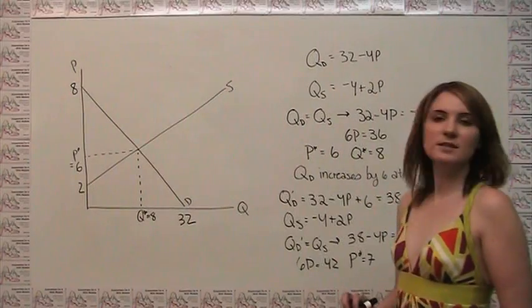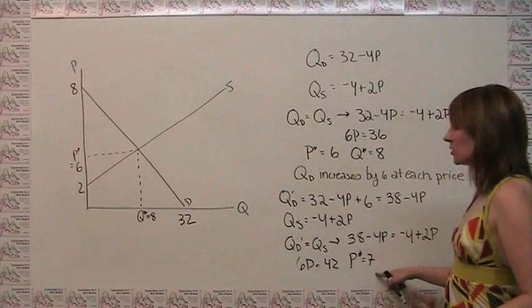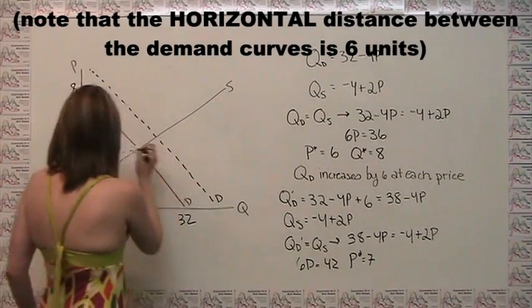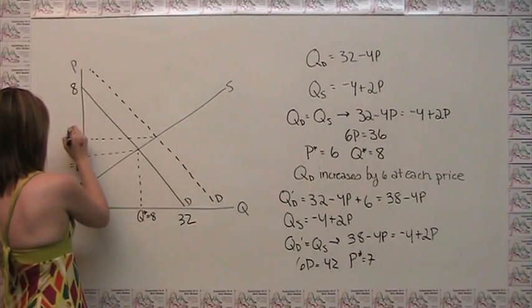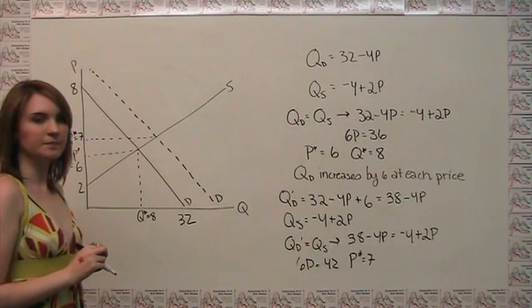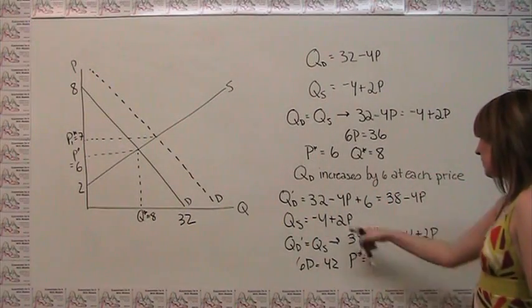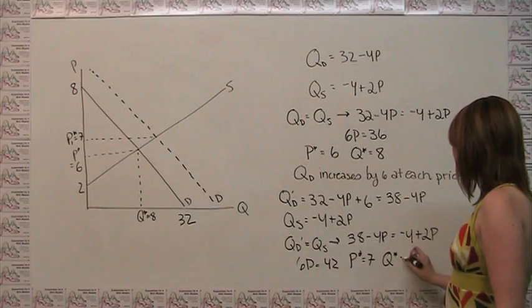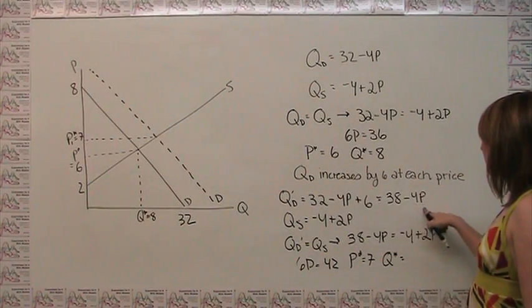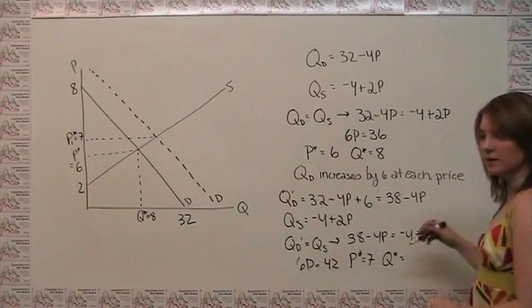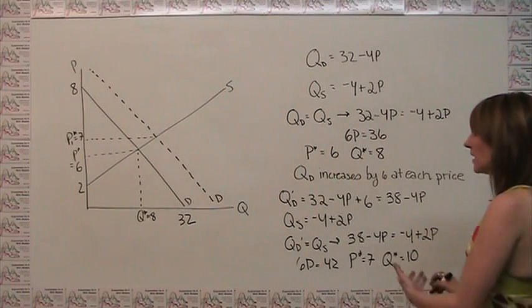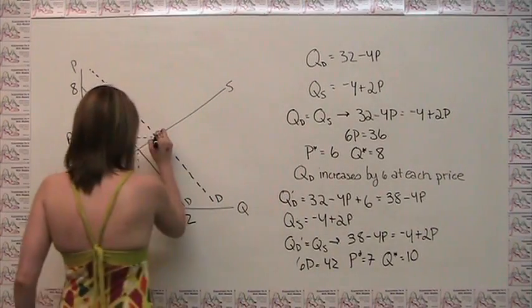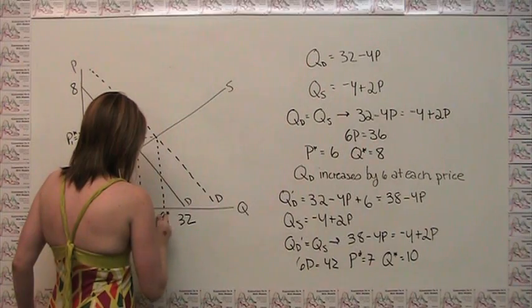Consistent with what we were expecting, when we get an increase in demand we also get a corresponding increase in equilibrium price. Our new equilibrium price p1* equals 7. The corresponding quantity can be found by plugging back into either the demand or supply equation: q* equals 38 minus 4 times 7, which is 38 minus 28, which is 10. So as expected with an increase in demand, we get an increase in both equilibrium price and equilibrium quantity. Our new equilibrium quantity q1* equals 10.